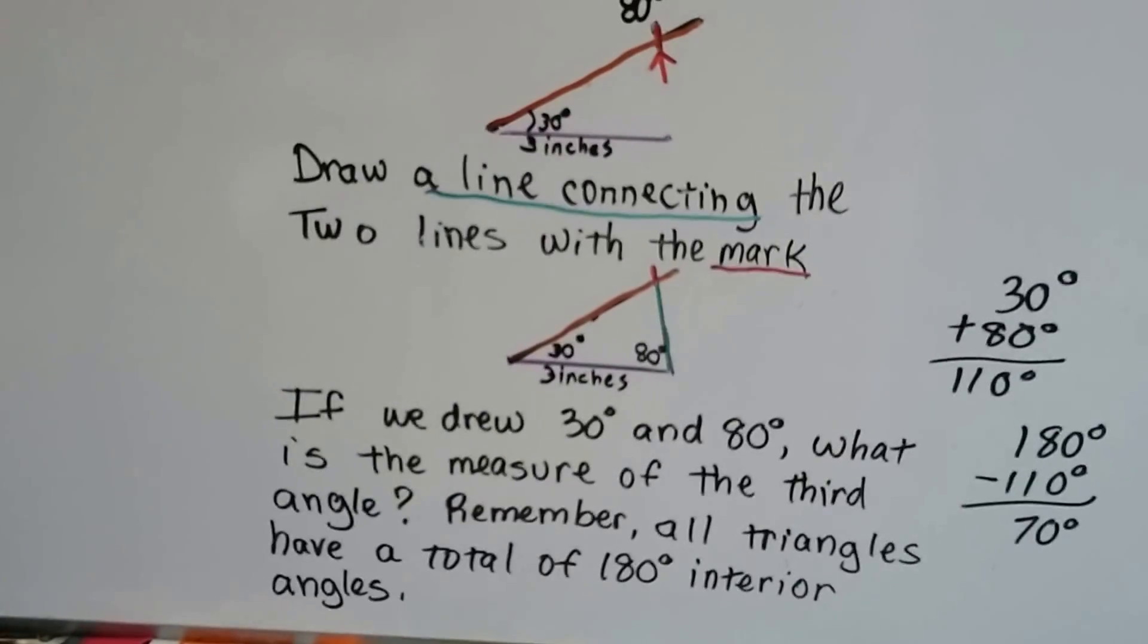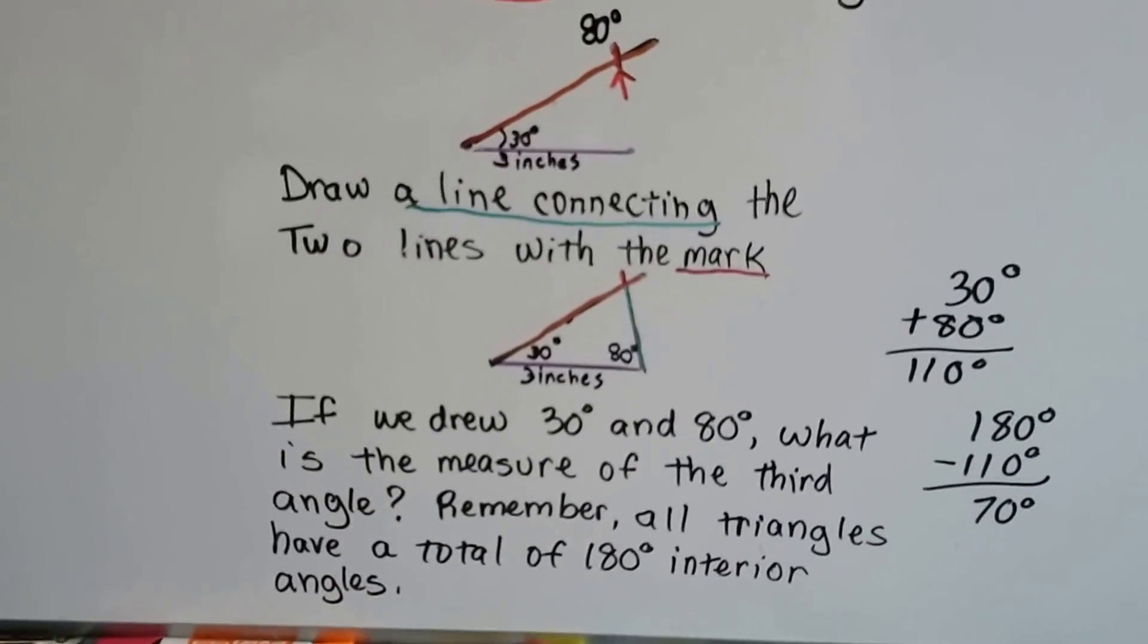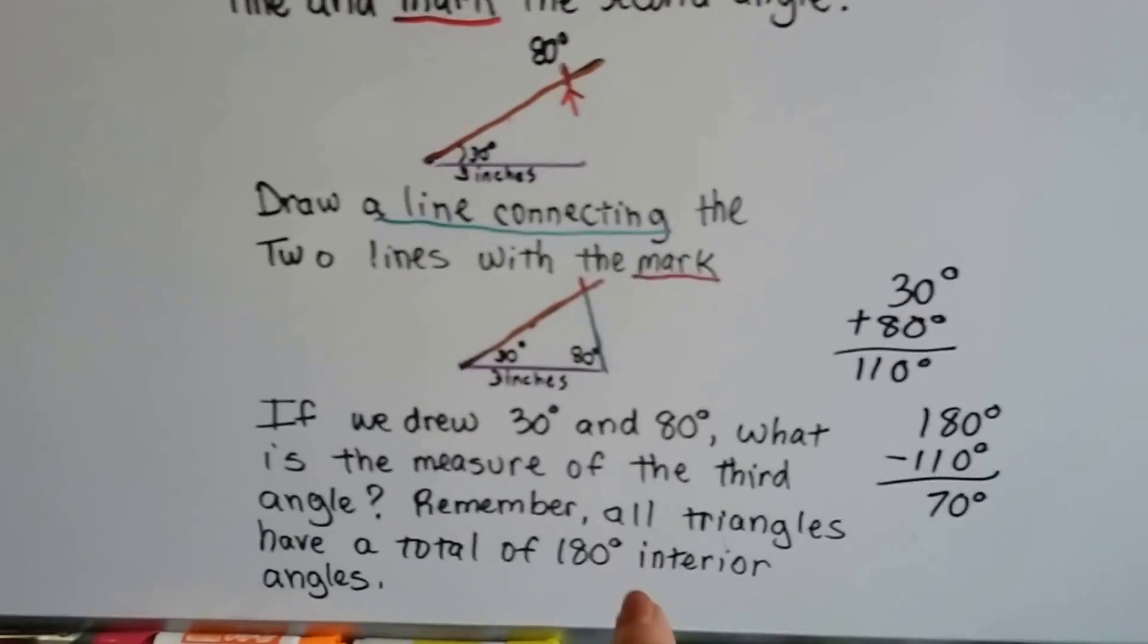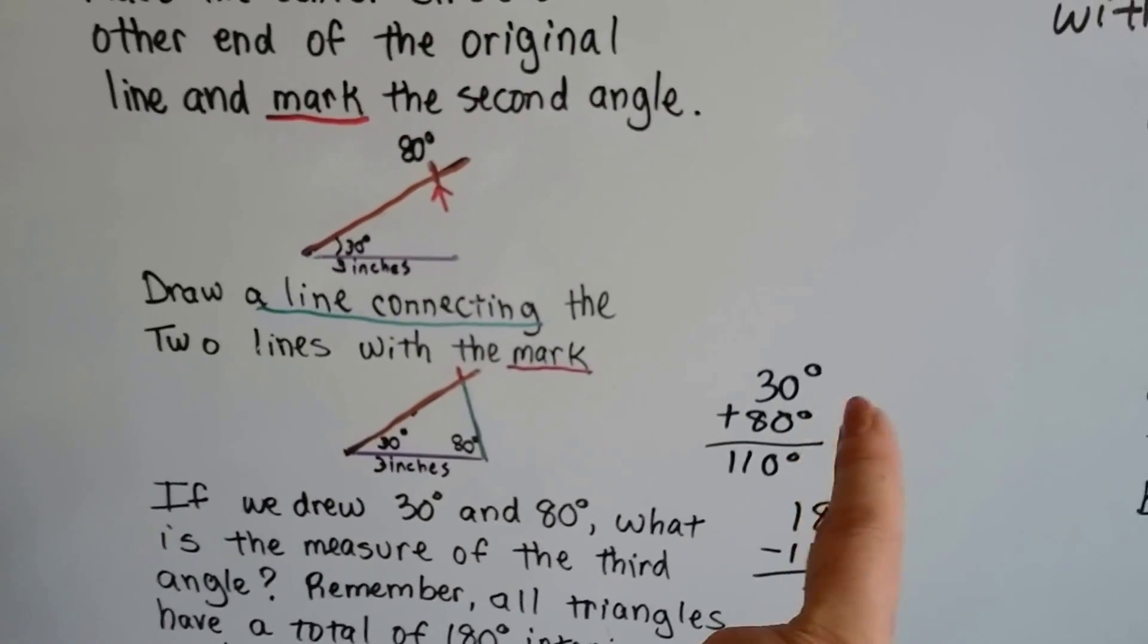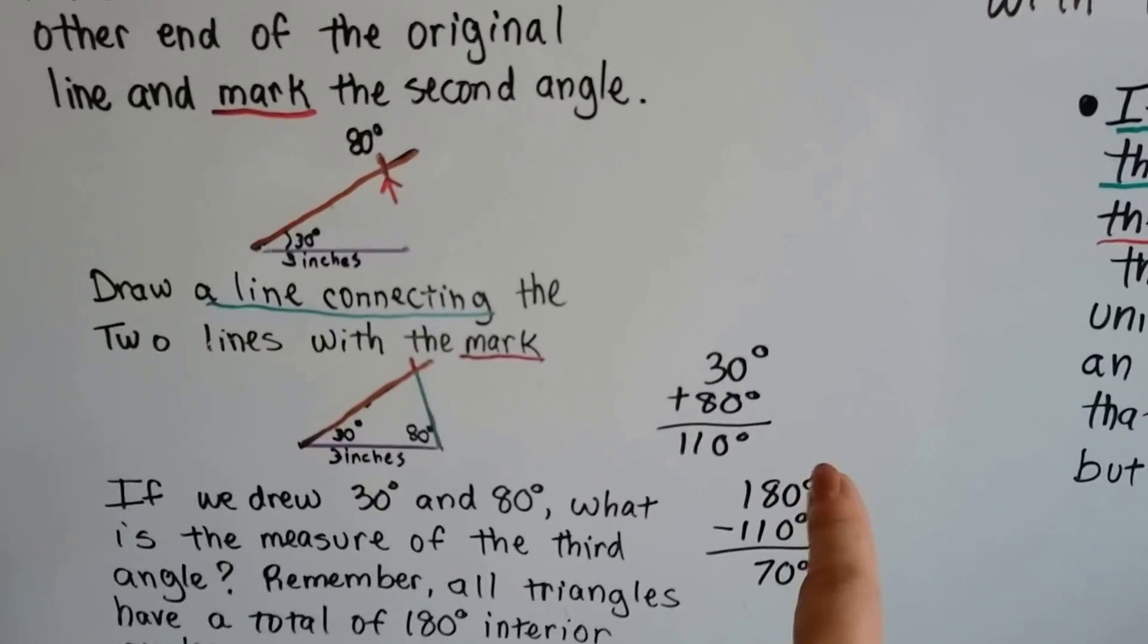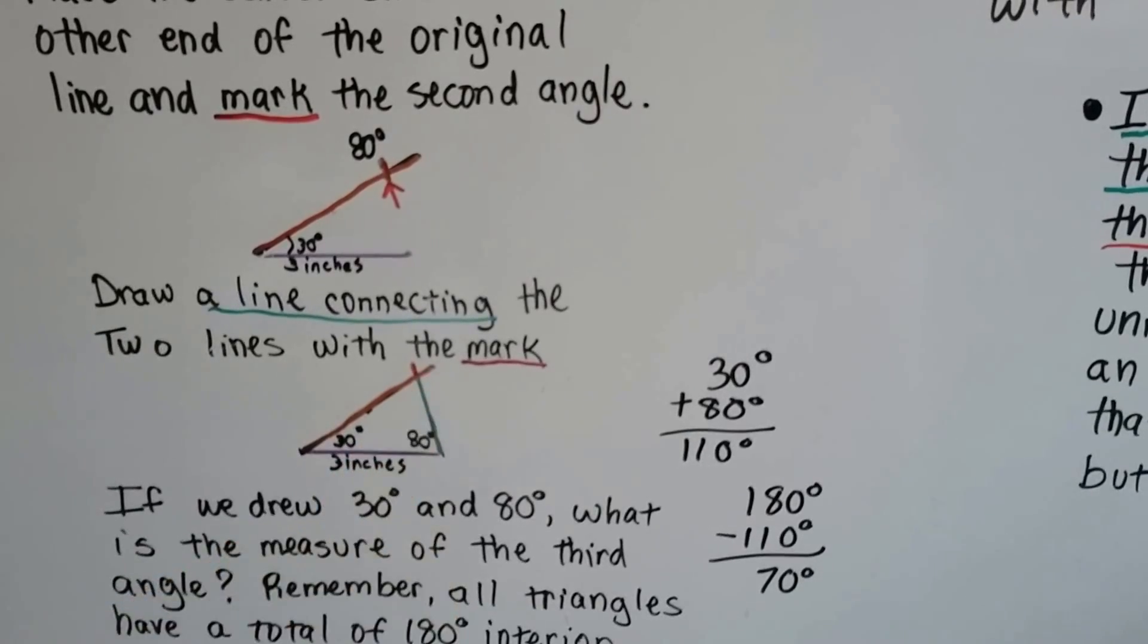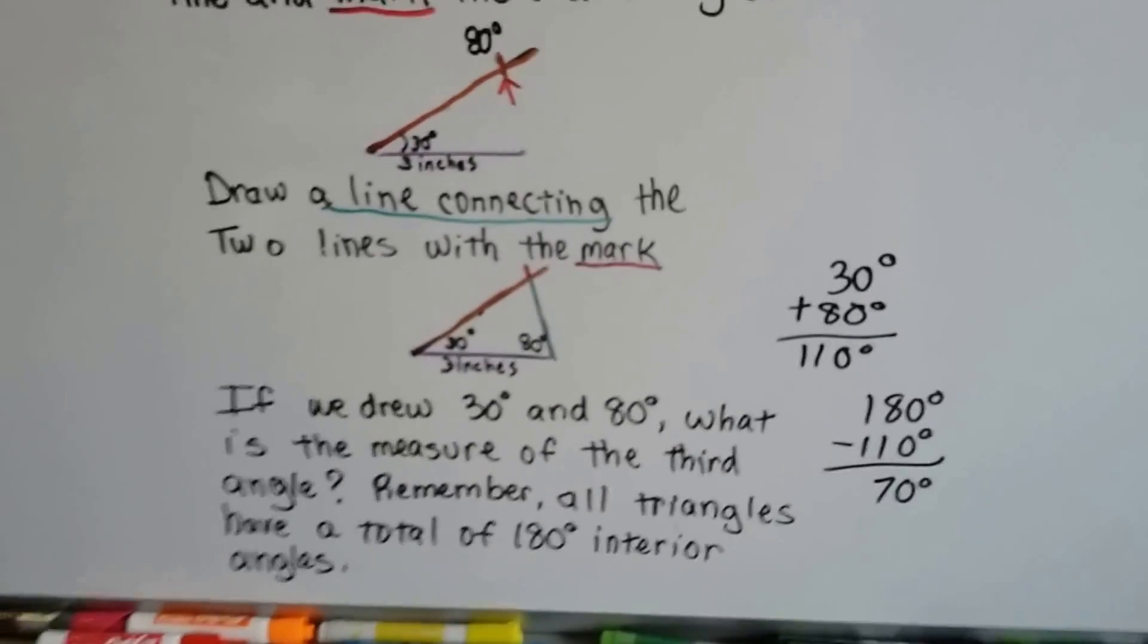Now if we drew a 30 degree angle and an 80 degree angle, what is the measure of the third angle? Well, remember what I said? That all triangles have a total of 180 interior degrees in their angles. So we could add the 30 and 80 together and get 110 and then subtract that from the 180. This third angle has to be 70 degrees.